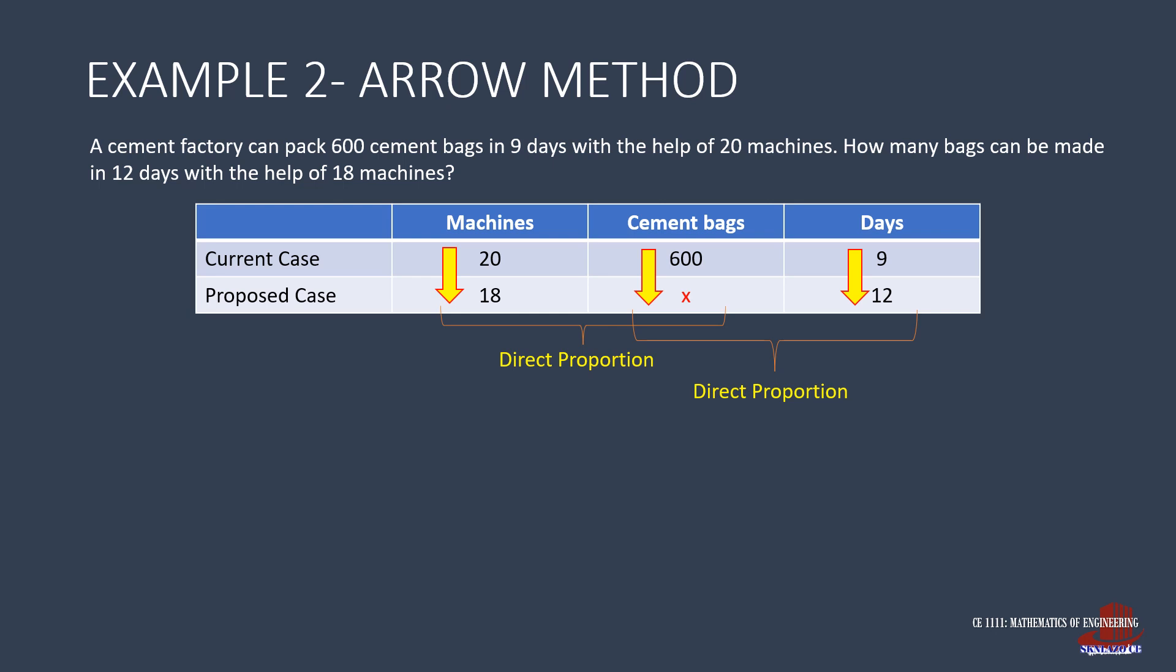Thus, the equation becomes 600 over X to start with the incomplete quantity, then equate this with the other two quantities. Those are 9 over 12 for the number of days, then multiplied by 20 over 18 for the number of machines. X is then solved as 600 times 12 times 18 over the quantity of 9 times 20, making X as 720 bags.